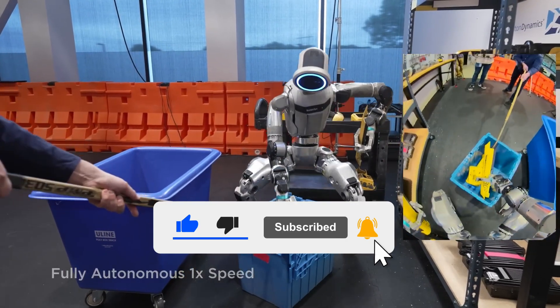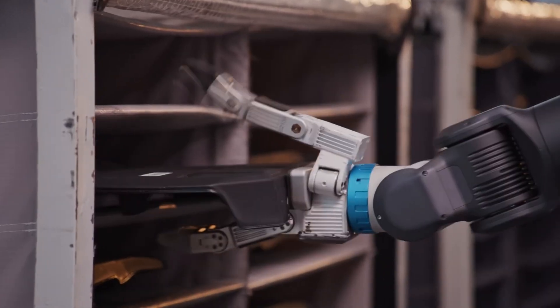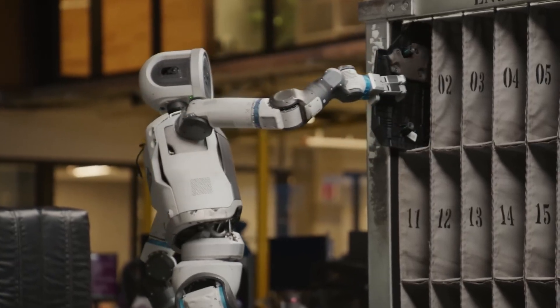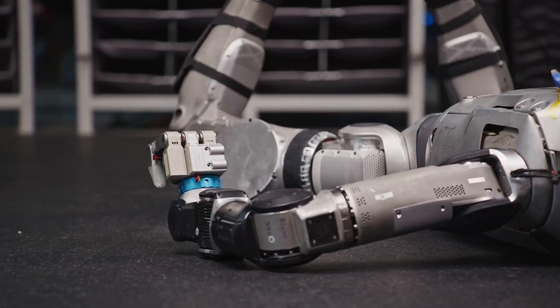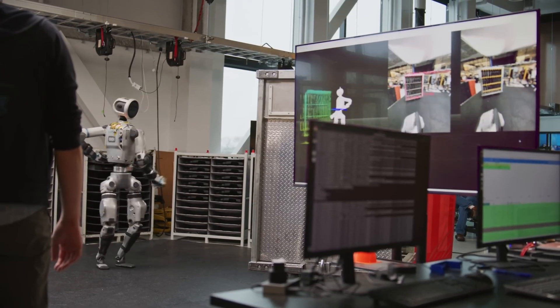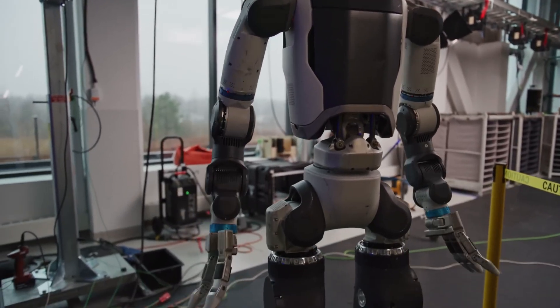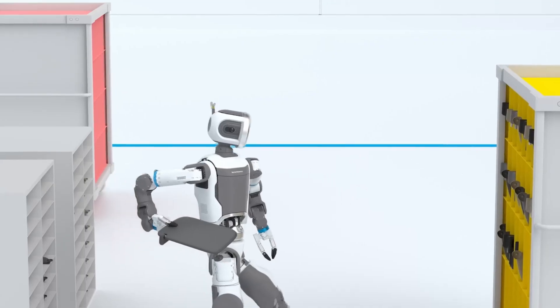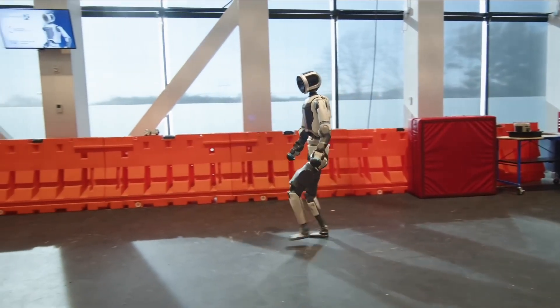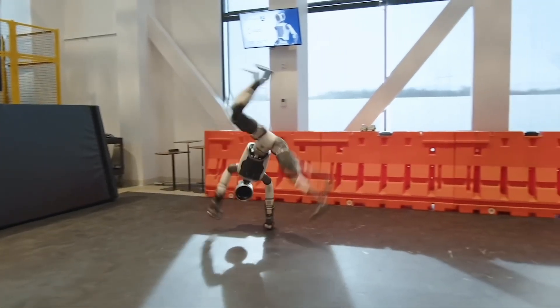This next chapter for Atlas is all about dexterity: tasks like bin picking, tool use, and assembling small components in industrial environments. Every upgrade to the hands feeds directly into that vision. Interestingly, as Boston Dynamics keeps refining these designs, they're slowly and naturally drifting toward more anthropomorphic forms, not for aesthetics, but because physics keeps rewarding the human layout. The company calls it an organic convergence. Whatever you call it, it's clear the next evolution of Atlas isn't about running faster, it's about learning to work.